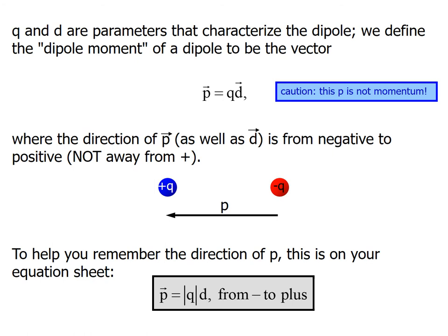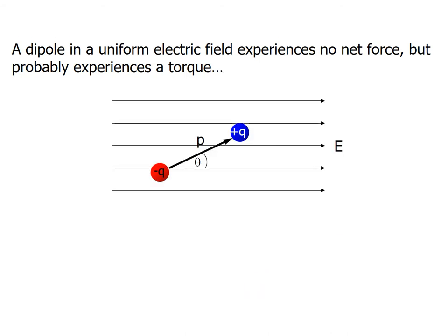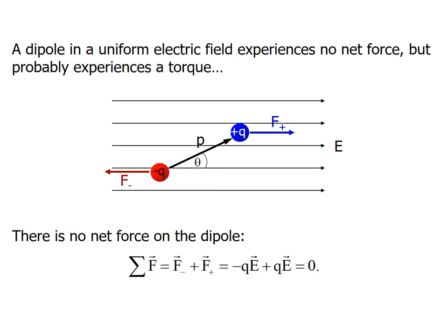So the dipole is in a uniform electric field. If the dipole is in a uniform electric field, the net force in the direction of P vector is equal to zero. There will be torque when the angle is theta. The plus Q experiences force F plus and minus Q experiences force F minus. If we look at the net force, F minus has magnitude QE and F plus has magnitude QE, so the resultant is zero. The net force on the dipole is zero. Now we have to calculate the torque.